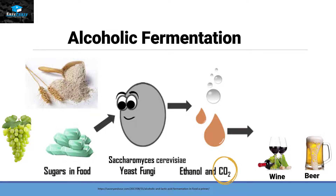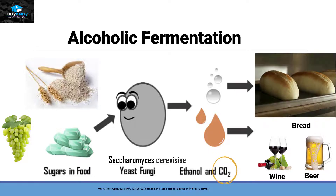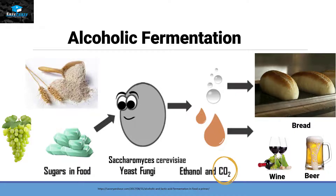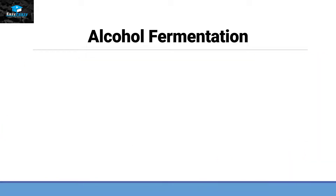As we know, we put yeast in our dough, and when the dough rises it is basically the carbon dioxide that makes the bread rise. Now we need to understand the process by which alcoholic fermentation is done — how glucose converts into ethanol and carbon dioxide. The second important question is why Saccharomyces cerevisiae produces carbon dioxide and ethanol. Let's get deep into this process.